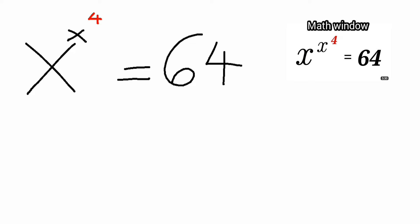Find the value of x. It's as simple as ABC. Now the first thing we are going to do is to simplify this 64. So x raised to the power of x raised to the power of 4 is equals to, and you know that 64 is same as 4 raised to the power of 3.